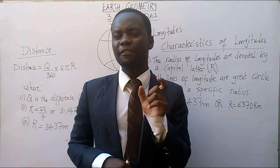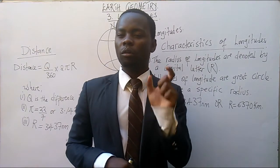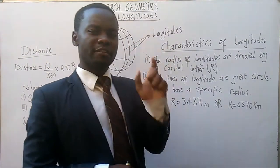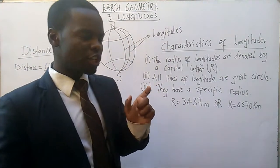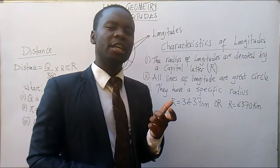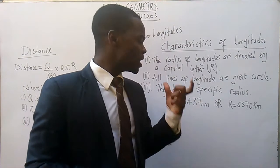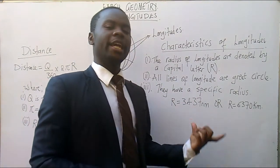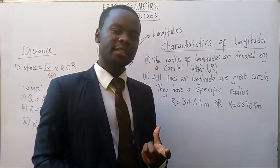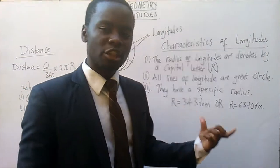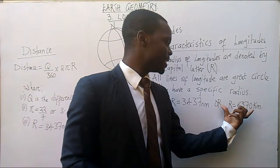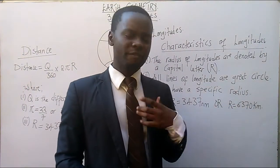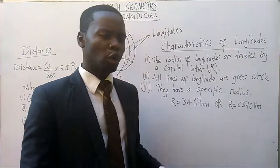The value of this radius is 3,437 nautical miles, or 6,370 kilometers. This is the radius of the longitudes. You would be advised which unit to use when solving problems.